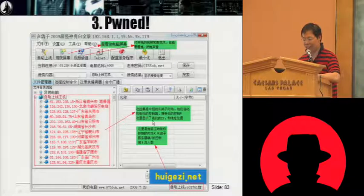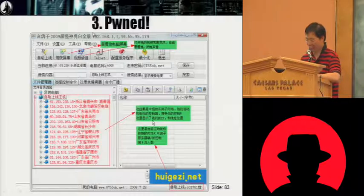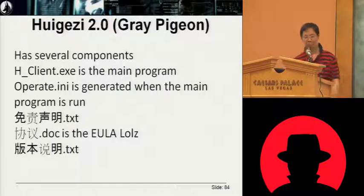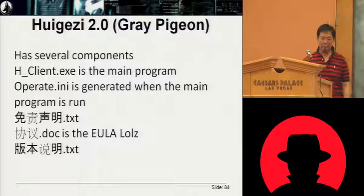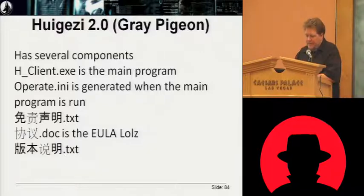This is Grey Pigeon 2.0.9 — super powerful, a premium version. Something like that in translation. We got some binaries for Grey Pigeon and we got the source code for Grey Pigeon. We started checking it out and there are some funny, interesting things in here.